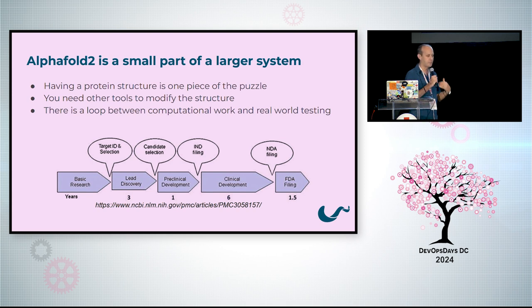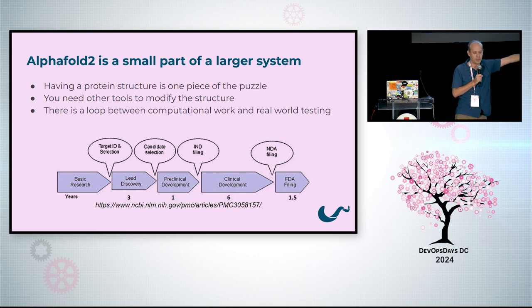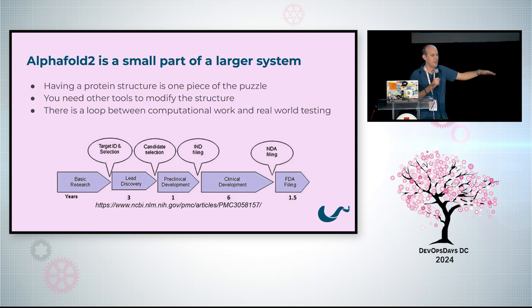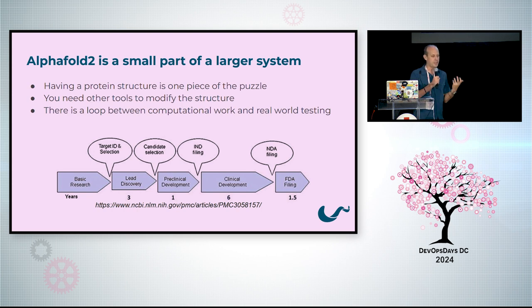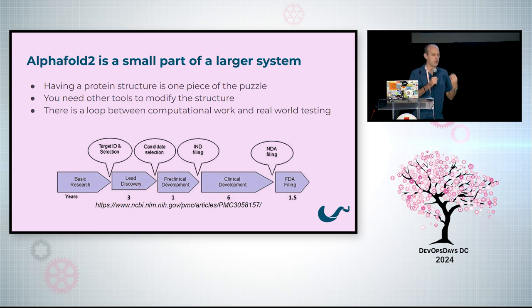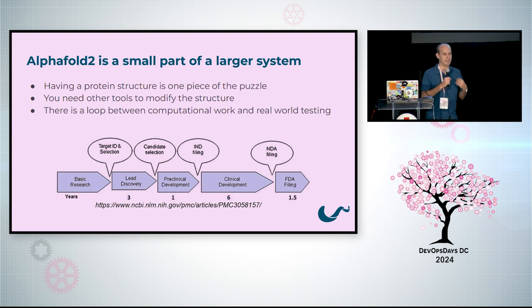If you're trying to make a protein engineering product, you need to be thinking about the whole process that you're a part of — in our case, the very first step of a process that can go on for more than a decade. And there's not just computational work; there's a loop between computational work and real-world testing. In order to take your tool and make it part of a product, you really need to understand how that loop works.